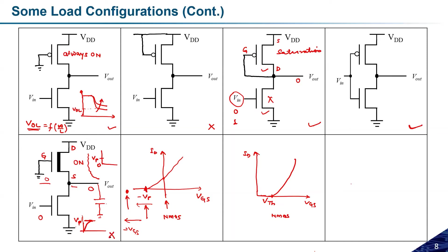If Vin equals one: the depletion load is still in the on state because Vgs = 0 when Vout = 0. This ground is connected, Vout becomes zero, and Vgs becomes zero again — meaning the load is on. So it acts as a voltage divider. The circuit swings between Vp and ground, and since Vp is very small, this does not act as an inverter.